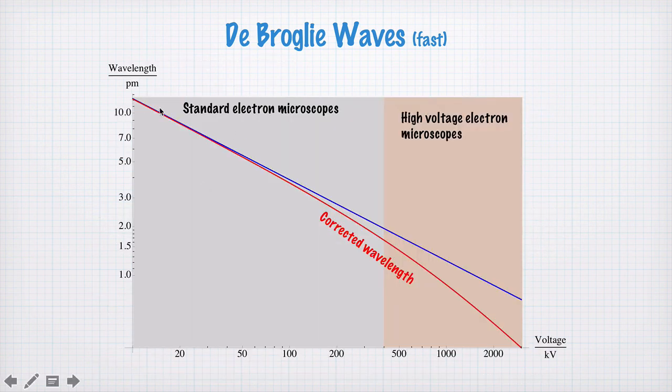Anyhow, here's the range of standard electron microscopes, ranging from about 1 up to 300 kiloelectron volts. And beyond that, we have what we call high voltage electron microscopes. The blue line shows you the wavelength without the relativistic correction, and the red is the relativistic corrected wavelength. So what's interesting here is that the relativistic correction makes the wavelength shorter, which increases, in principle, the resolution of your electron microscope.